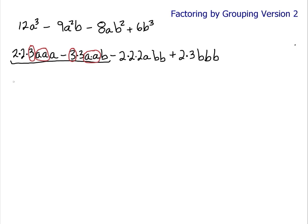So, I can factor out a 3A square, right? And what's left over? Oh, we got to look over here. 2 times 2 is 4. Don't forget the A. Subtract 3B. Okay.